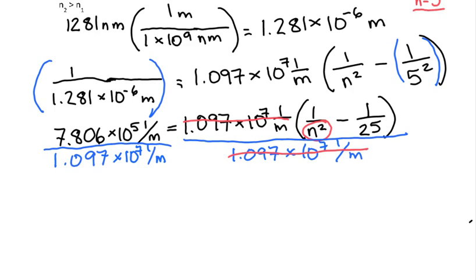So we have 7.806 times 10 to the 5th, 1 over meters, divided by 1.097 times 10 to the 7th, 1 over meters. 1 over meters cancels. And after you do that math, you get 0.071158 is equal to 1 over n squared, minus, I'm going to do this math now, 1 divided by 25 is equal to 0.04.